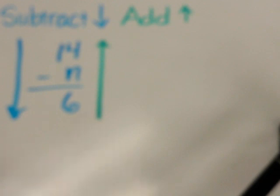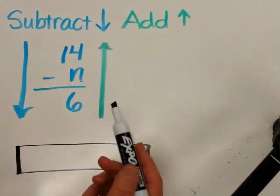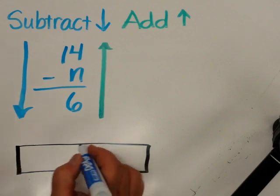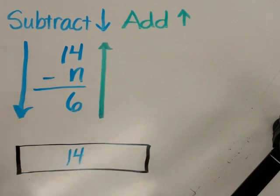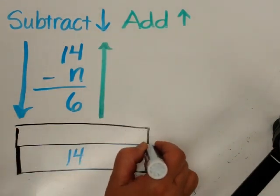Another thing you can do to help yourself in missing number problems is you can always use model drawing. Remember, we draw a long unit bar to represent the largest number in the problem. So in this problem, the largest number will be, you got it, 14. And then you chunk out that unit bar to show what parts are going to make 14.